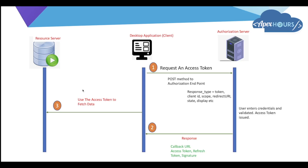In the first step, the desktop application requests an access token and it reaches the authorization server. It is a GET method made to the authorization endpoint where the response type is 'token'. You provide the client ID, scope — which matches what you set in the connected app — and a redirect URI which must match exactly what you put in the connected app.